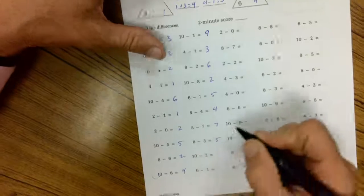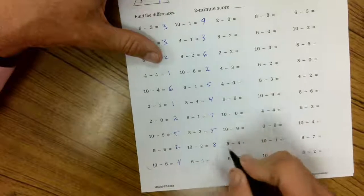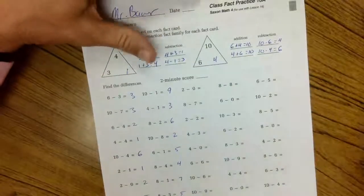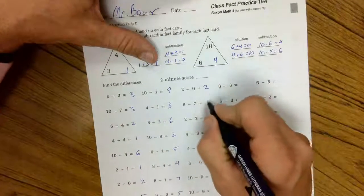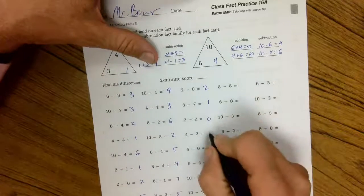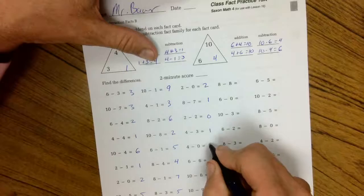8 minus 3 is 5. 10 minus 2 is 8. 6 minus 1 is 5. 2 minus 0 is 2. 8 minus 7 is 1. 2 minus 2 is 0. 4 minus 3 is 1. 4 minus 0 is 4.